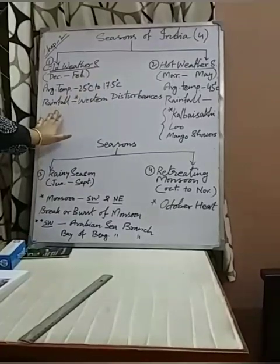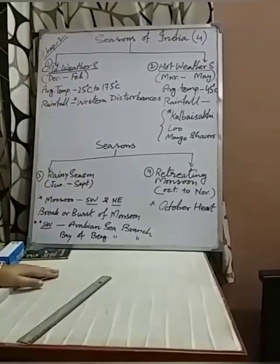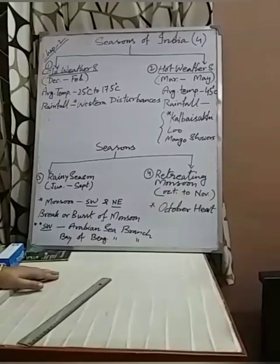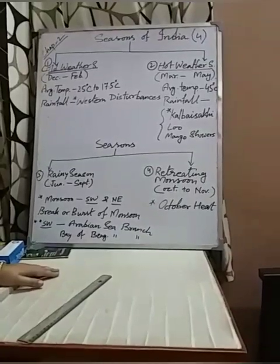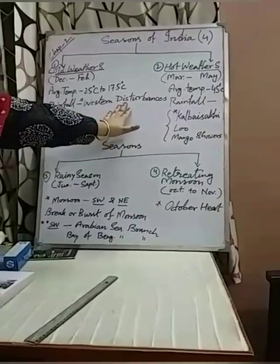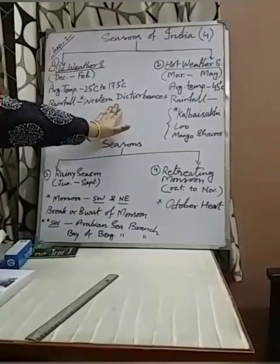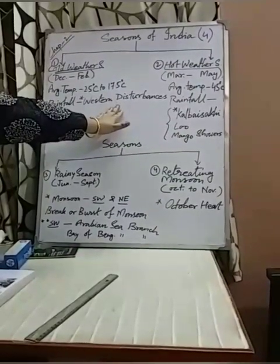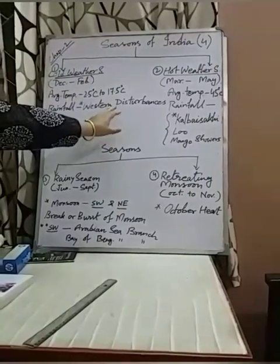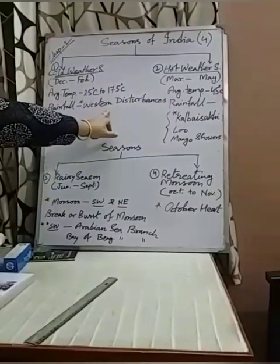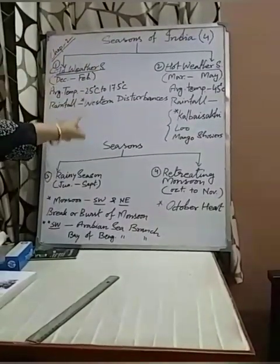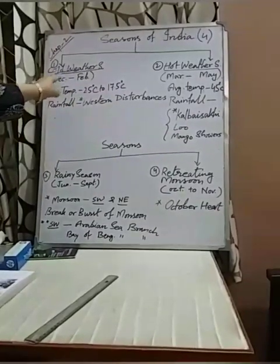During winter season we don't get enough rain, except in a few parts — Punjab and Haryana in the western part of India — where due to western disturbance, some rainfall takes place. This western disturbance is actually a cyclonic storm that develops over the Mediterranean Sea and comes towards the western part of our country. It is very helpful for wheat cultivation in Punjab. High pressure also develops throughout the country because of the low temperatures during this season.